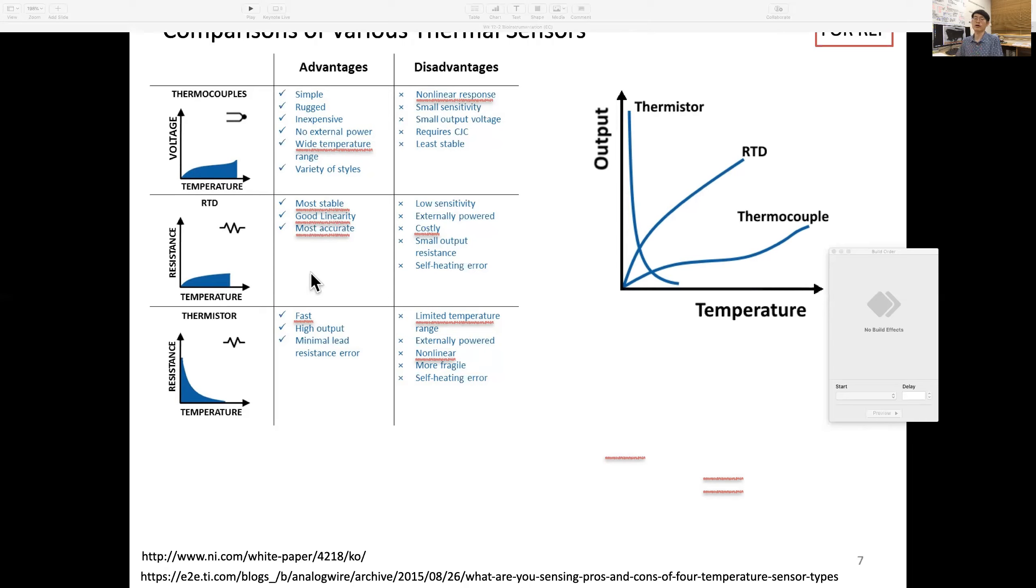However, RTDs require pure metal, so they're costly and manufacturing is difficult. Thermistors are very quick and fast, based on polymer sensing elements. You can see the temperature range is limited and itself is a non-linear response.